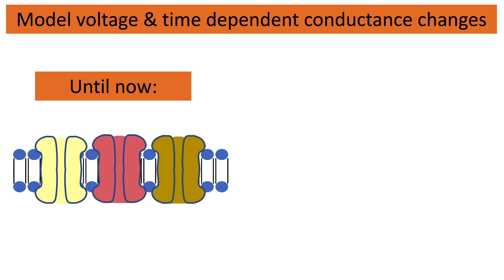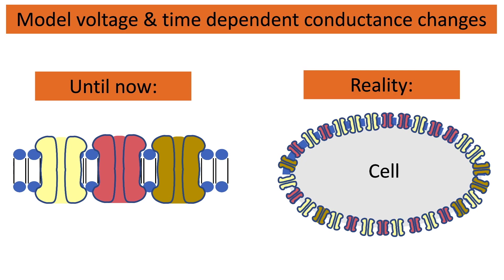Up until now we had this picture of three channels, but in reality the cell membrane has many, many channels and we need to find a way to put this large amount of channels into the three representative channels. This is done as follows.